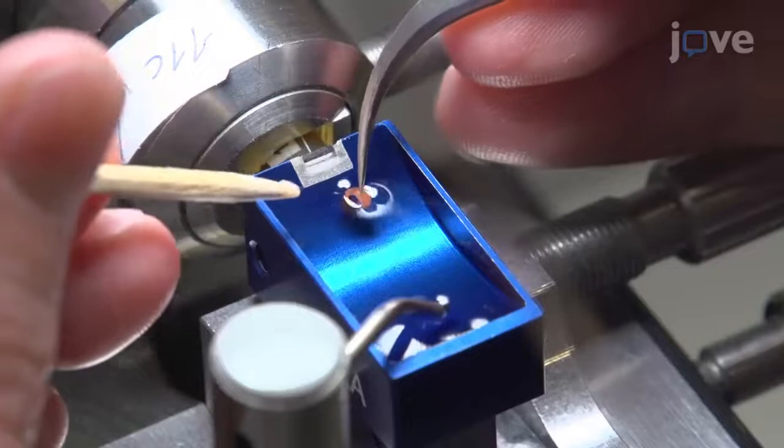Then, counter-stain the ultra-thin sections on the slot grids using 2% uranyl acetate for 30 minutes.